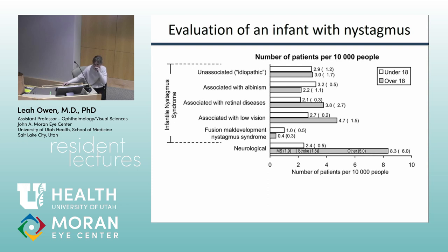When evaluating an infant with nystagmus, there are newer terms that can be unintuitive. You can have idiopathic nystagmus, which used to be called congenital motor nystagmus. Now they call it infantile nystagmus syndrome and lump several types into it. Within that is idiopathic, where the child will have normal vision, normal vision development, normal dilated eye exam, and normal refraction — they just have eye movements.